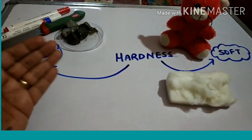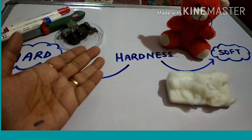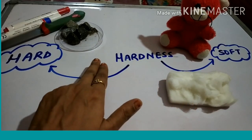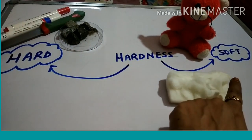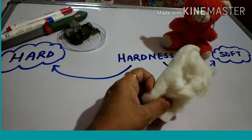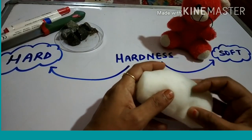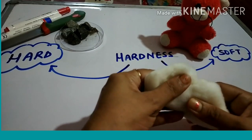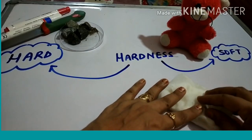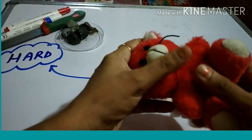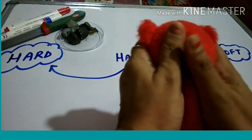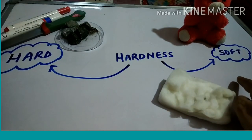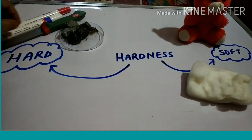After appearance, the next property is hardness. There are few things around us which are hard, whereas there are few things which are soft. This property is categorized in two parts: things which are hard, and things which are soft. I have taken cotton here — try to press it. You can see that you can easily press the cotton. Take your favorite soft toy and try to press it — you will find that you can easily compress it. When you can easily compress anything, it is soft.